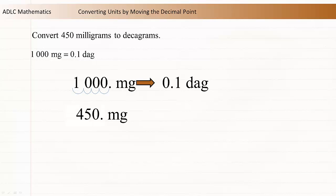Now use the same movement on 450. 1, 2, 3, 4. After filling the empty space with a 0, this gives a value of 0.045. So 450 milligrams is equal to 0.045 decagrams.